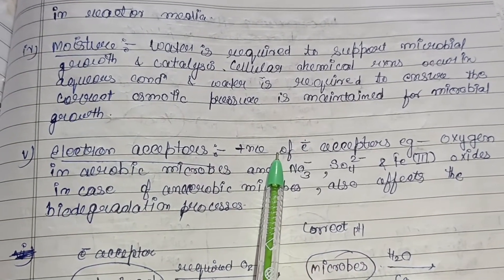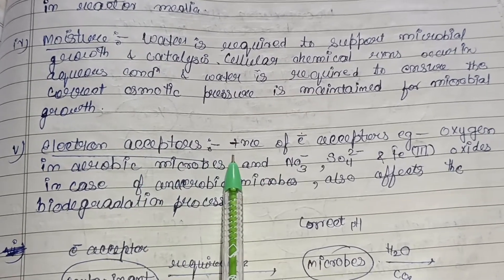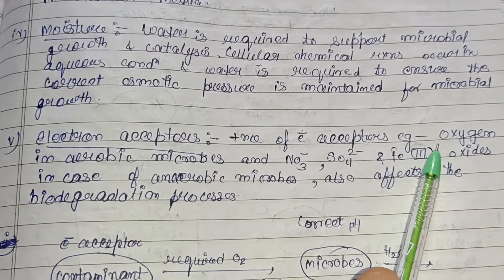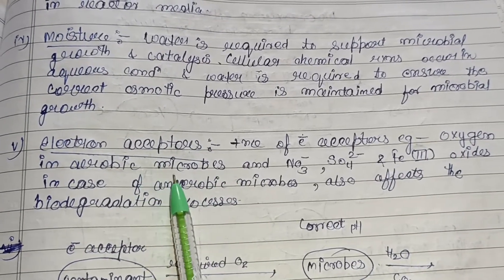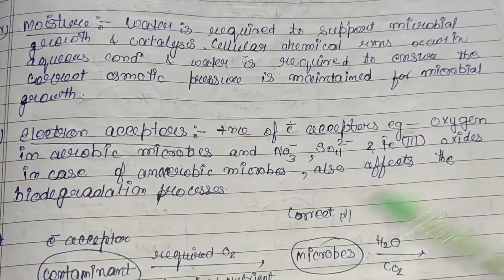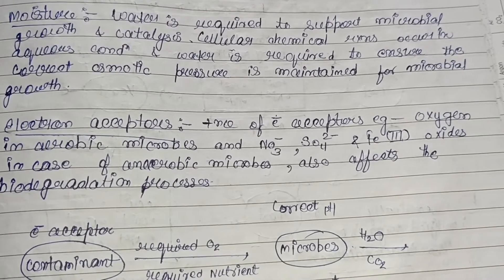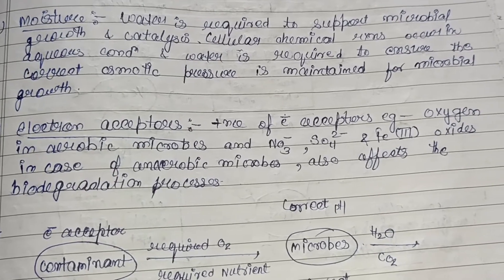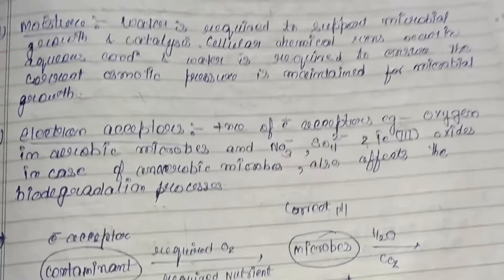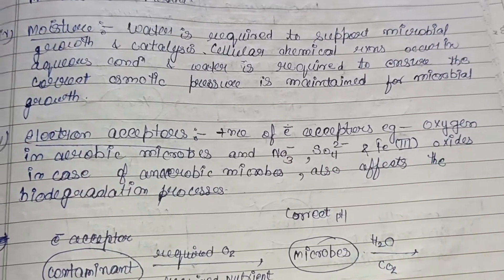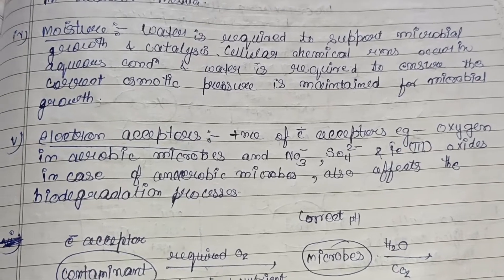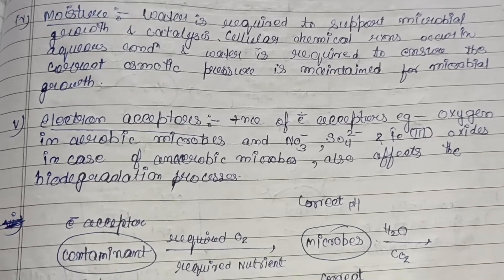Electron acceptors also play a role. For aerobic microbes, oxygen is the electron acceptor. For anaerobic microbes, which do not require oxygen, electron acceptors include NO₃⁻, SO₄²⁻, and iron(III) oxides. These all affect the biodegradation process. These are the main factors that affect the bioremediation activity of a particular microbe.